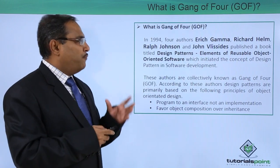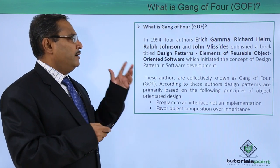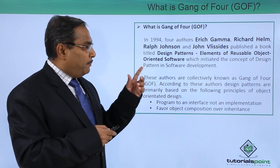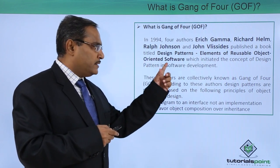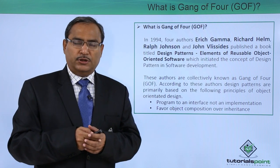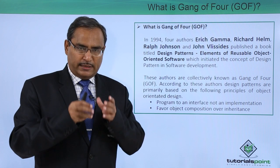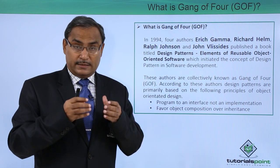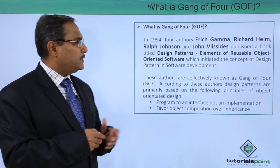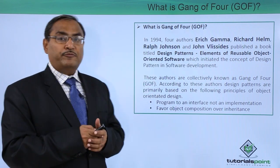In 1994, four authors — Eric Gamma, Richard Helm, Ralph Johnson, and John Vlissides — published a book titled 'Design Patterns: Elements of Reusable Object-Oriented Software.' In this book, this Gang of Four suggested 23 design patterns for software developers, which initiated the concept of design patterns in software development.